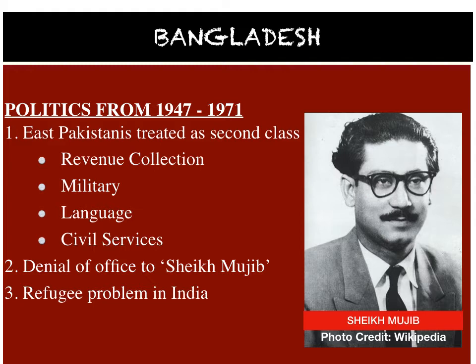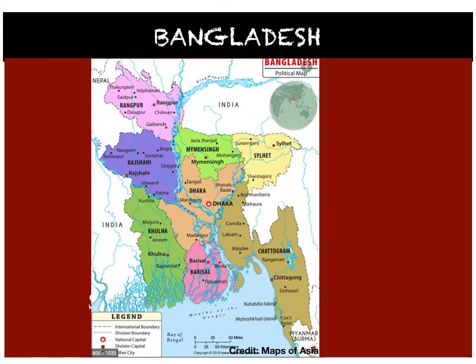Pakistan accused India of conspiracy to break it up. Finally, after months of diplomatic tension and military build-up, a full-scale war between India and Pakistan broke out in December 1971. Pakistani aircraft attacked Punjab and Rajasthan while the army moved on to the Jammu and Kashmir front. India retaliated with an attack involving the Air Force, Navy, and Army on both the Western and Eastern Fronts. India made rapid progress in East Pakistan, and within 10 days, the Indian army had surrounded Dhaka from three sides and the Pakistan army had to surrender. India then declared a unilateral ceasefire.